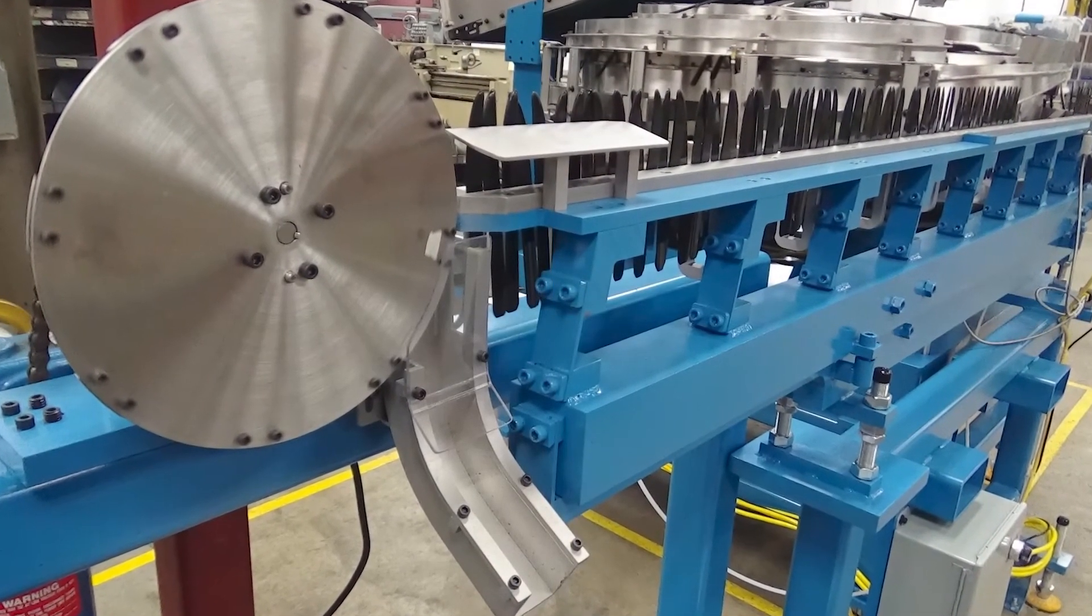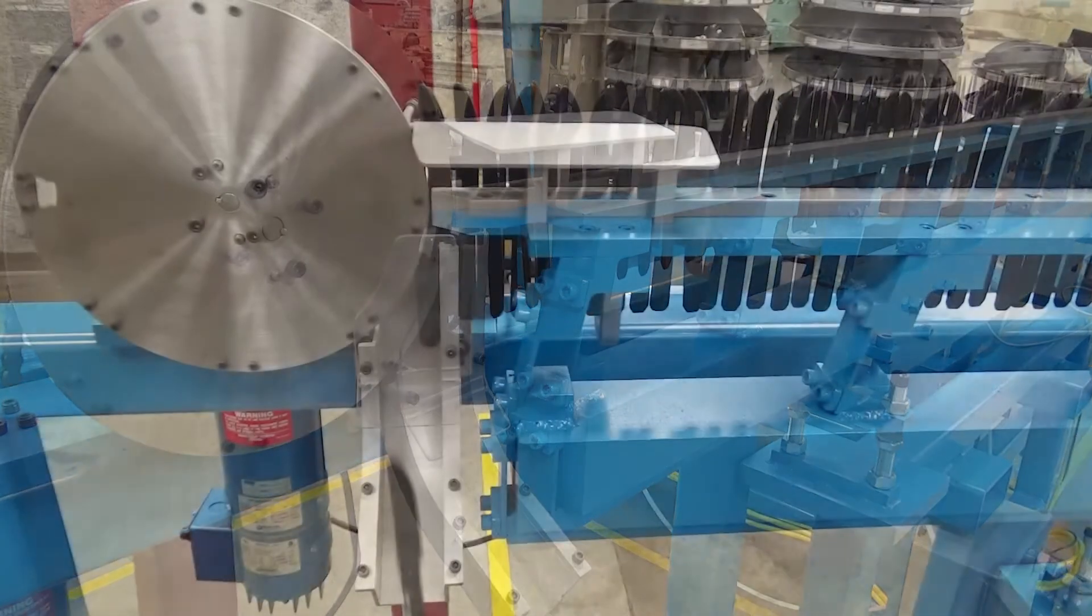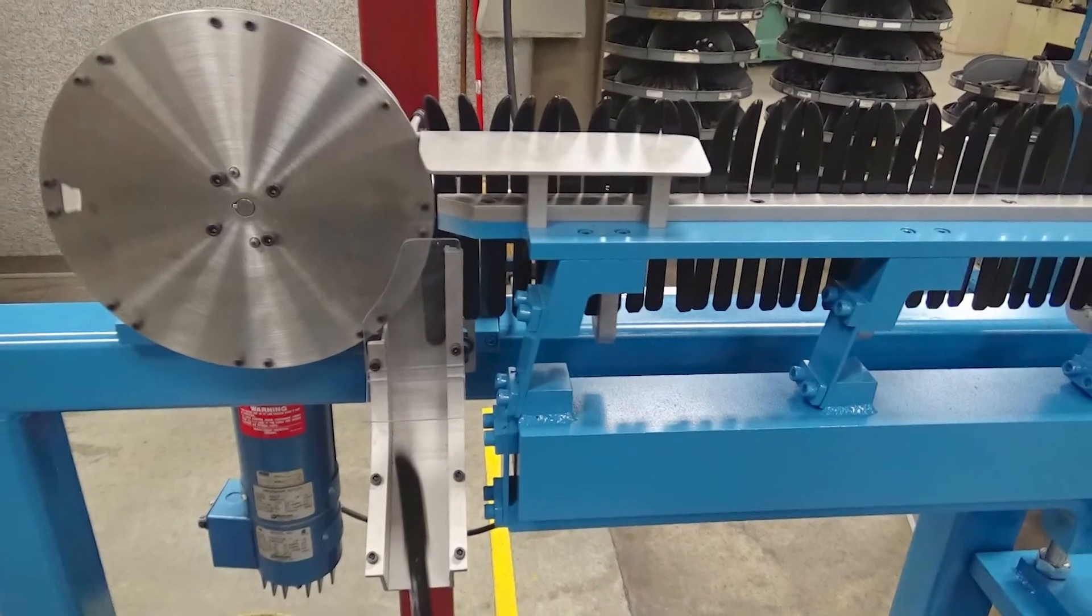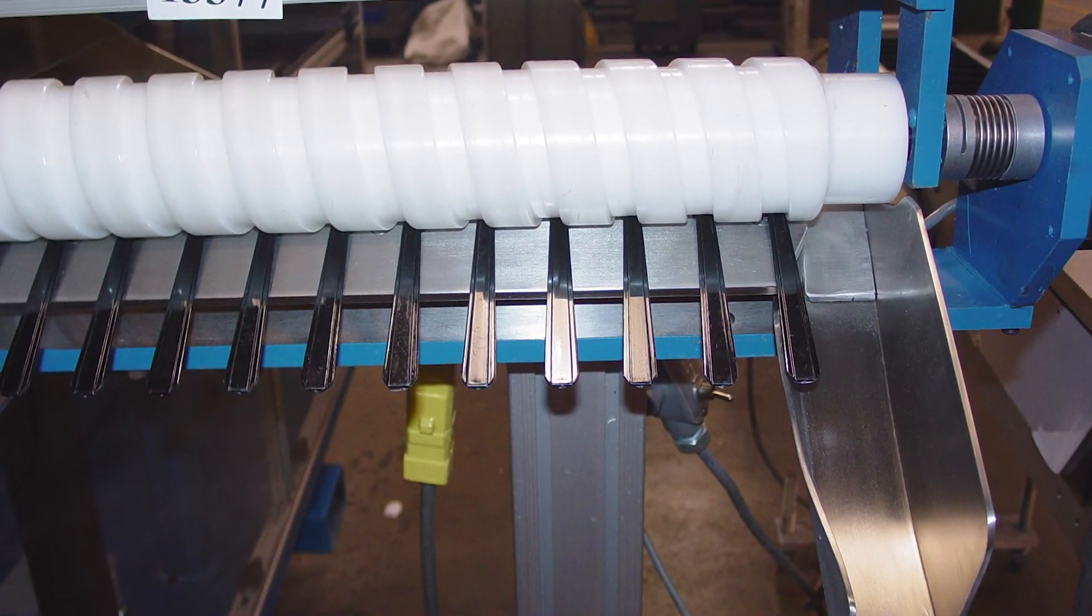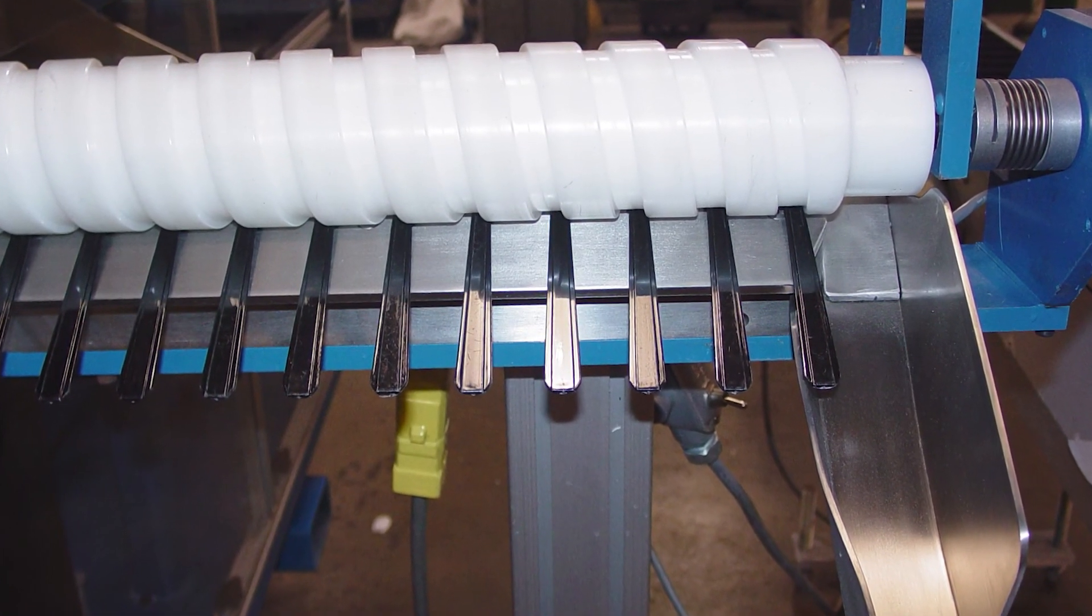Then the mechanism would lift vertically to present the part for robotic pickup. We also have a couple of packaging type applications where we get involved with various timing screws. You can see this is just some cutlery applications where we have various forms of timing screws to be able to drop into bagging type applications.